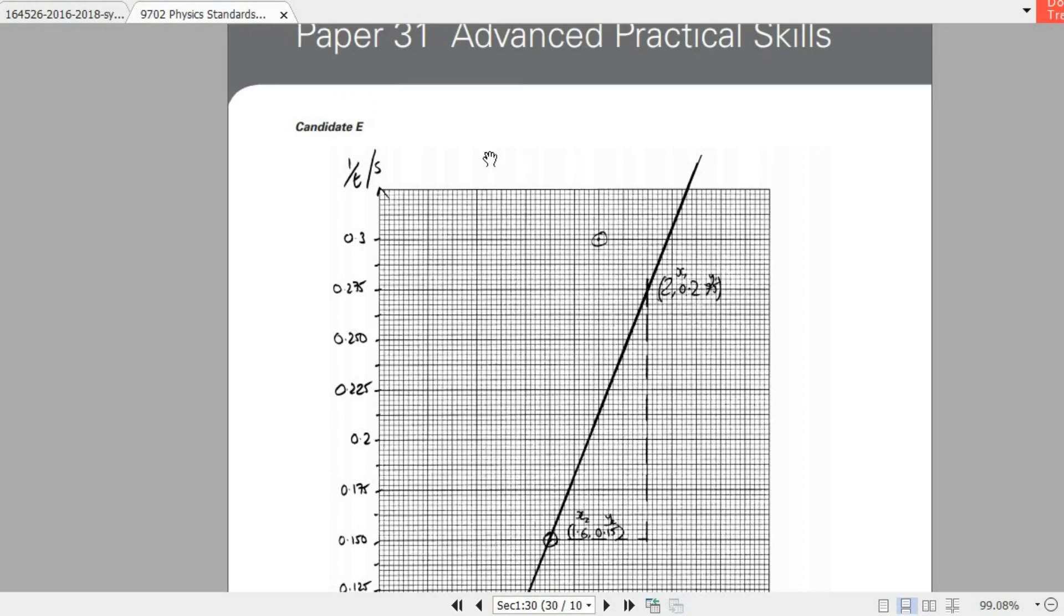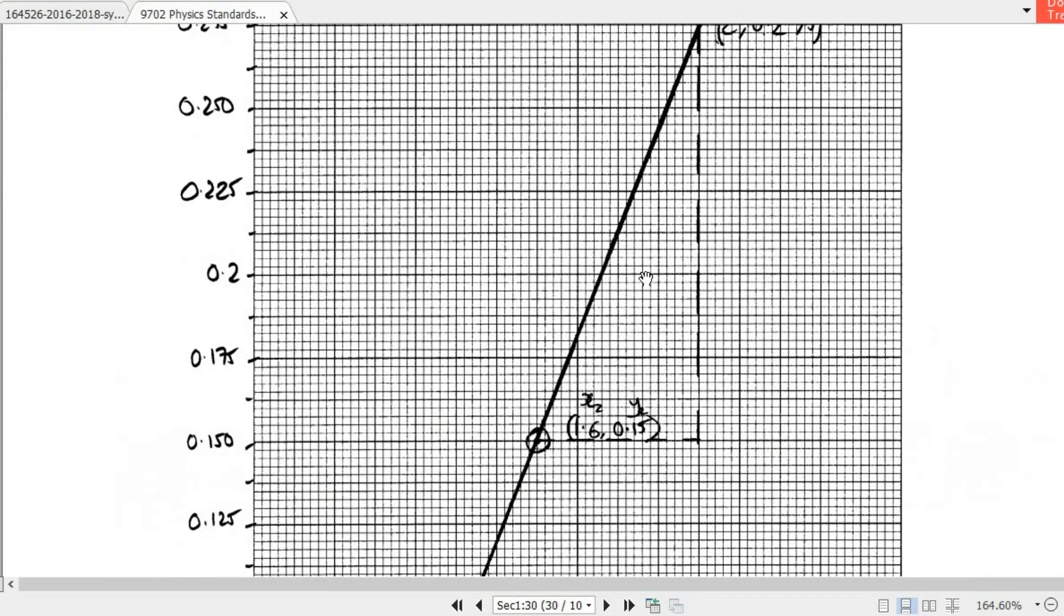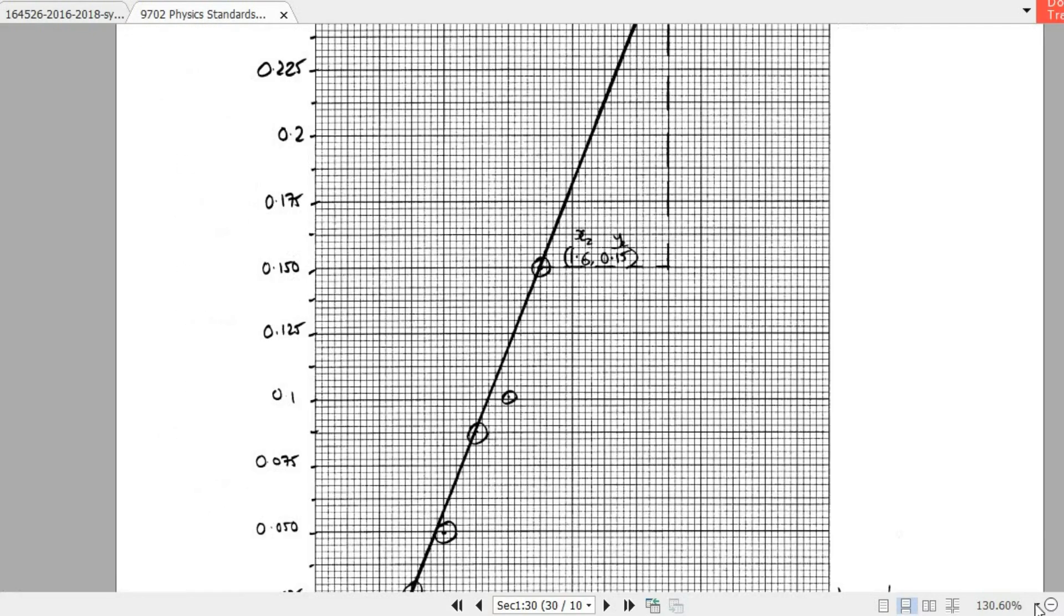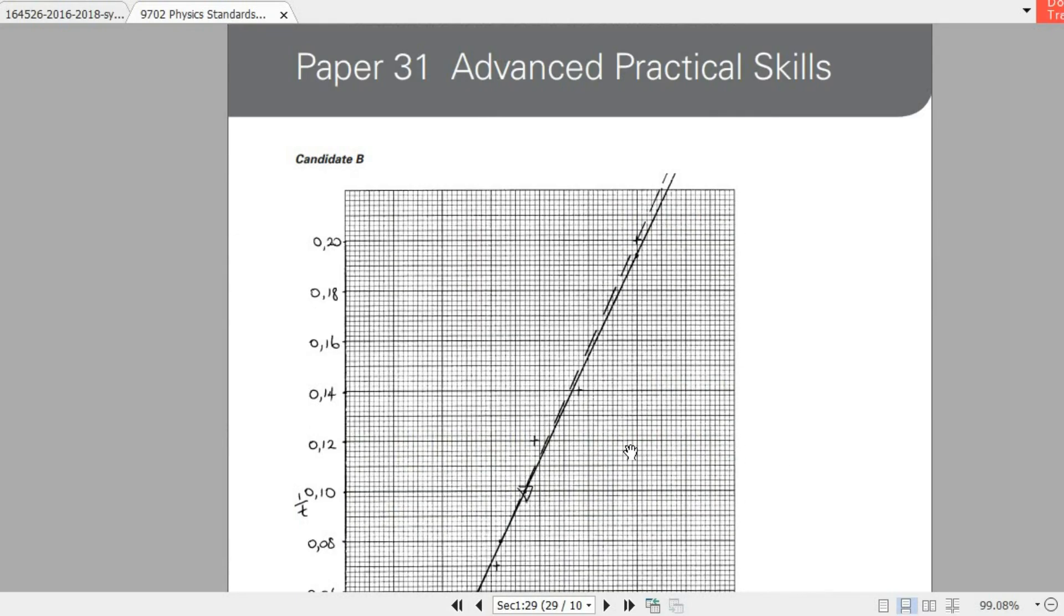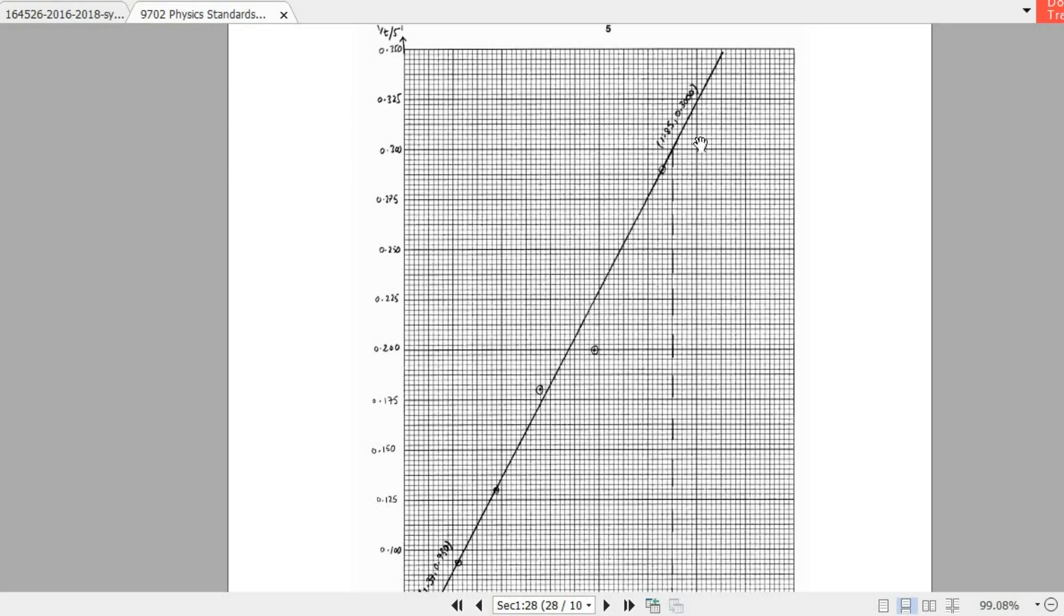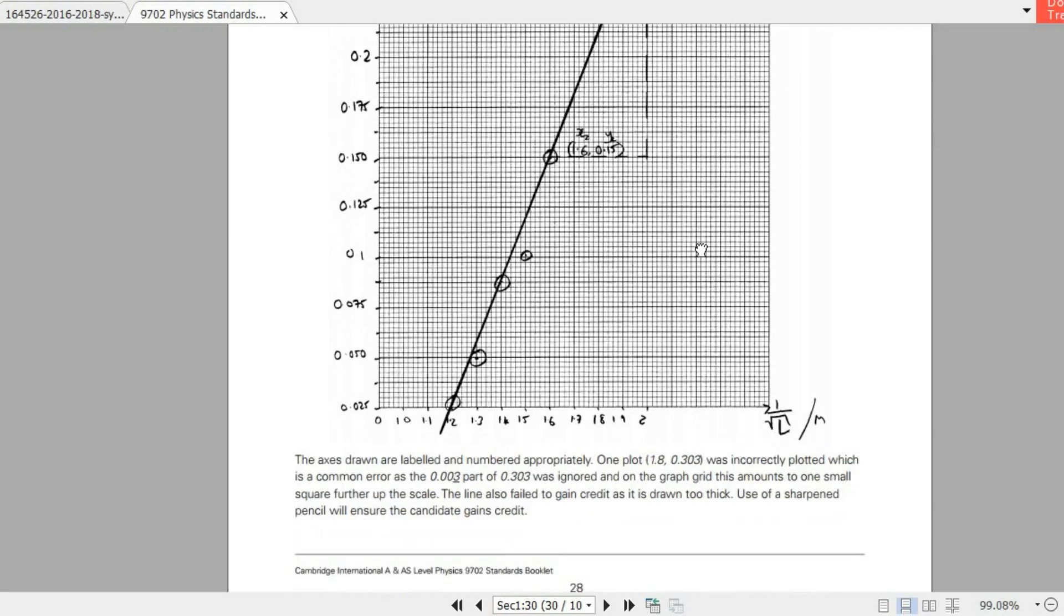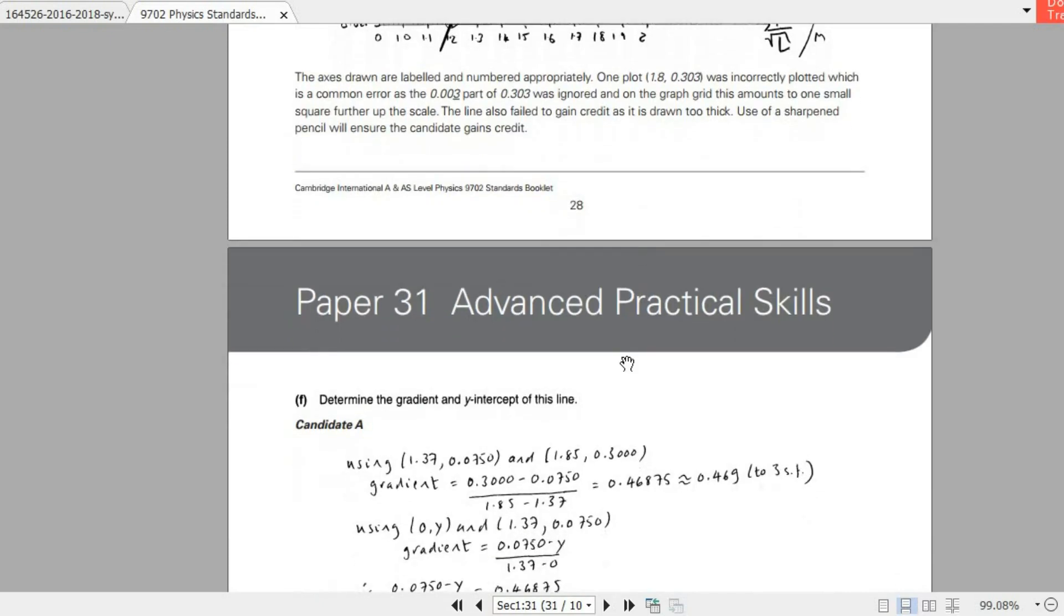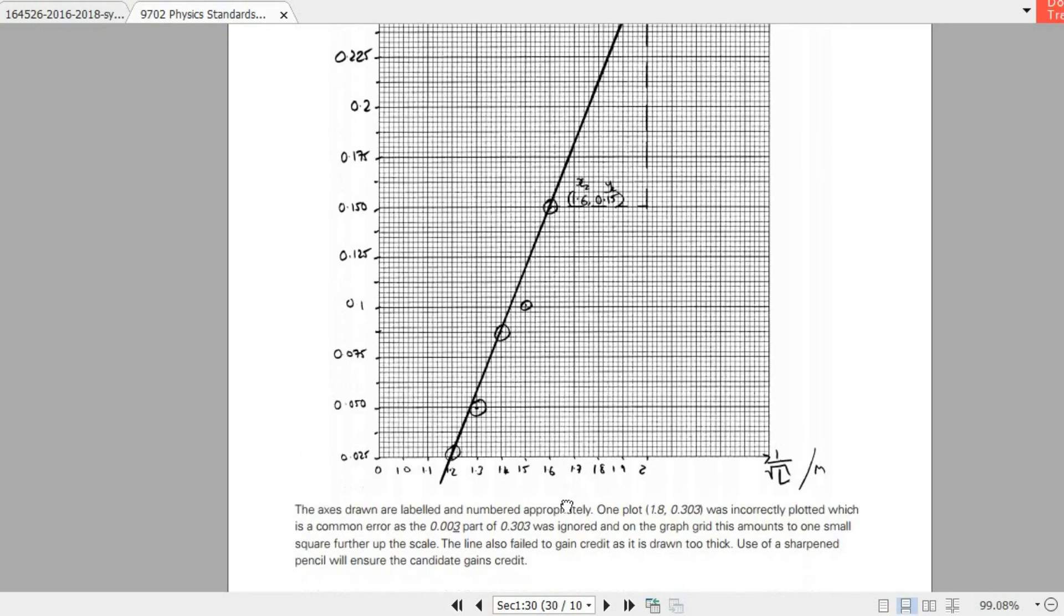And we have an E grade graph like candidate E. So here you can see he did label it and everything. The scale isn't effectively used. It barely uses more than half or actually just half. Another problem about the gradient triangle is it occupies less than the half of the plotted line. The line that you draw, your best fit line, more than half of it should be used for drawing the gradient triangle. This is a pretty poor graph. It says the line is too thick. There's too many anomalous points. The scatter is awful.